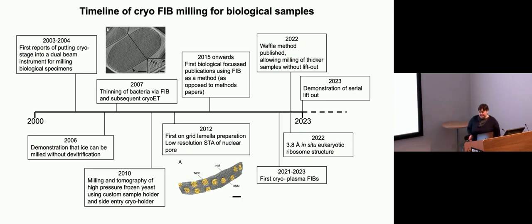I thought it would be interesting to show a timeline of the developments for cryo-FIB. This starts in the year 2000. Whilst these instruments have been around for a while, it's only the early 2000s that there were first reports of people putting cryo-stages into these dual beams and trying to mill biological specimens. All these early works, everything was very homemade, lots of adaptations and quite complicated workflows. It was about 2012 when we first saw two separate groups that reported the kind of on-grid lamellar preparation in the way that we would do now.